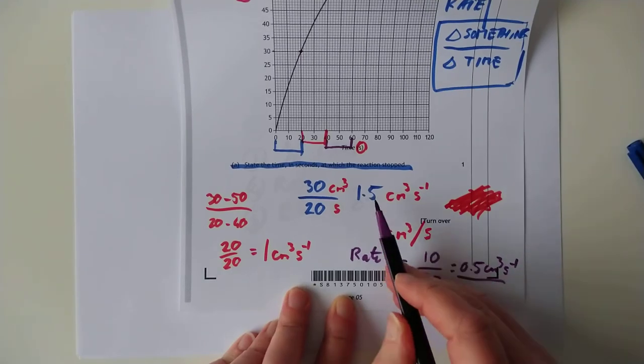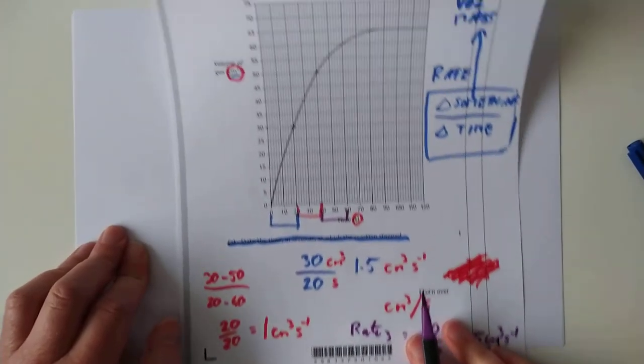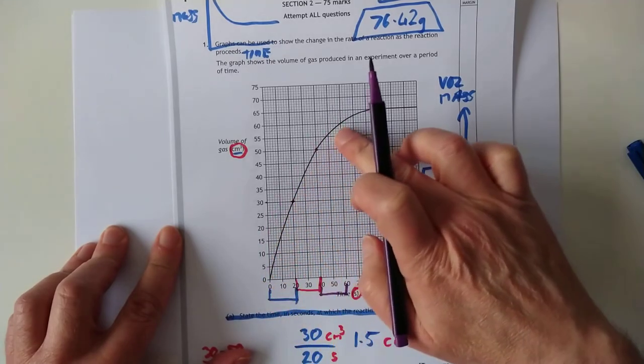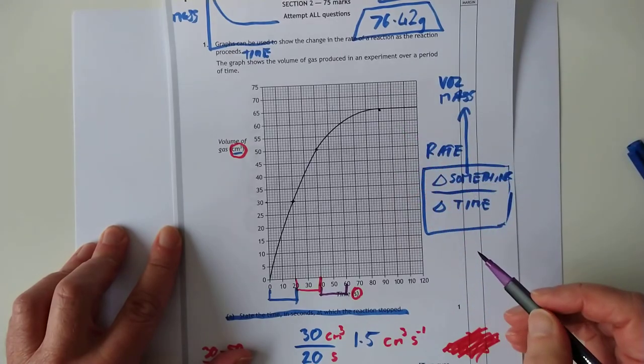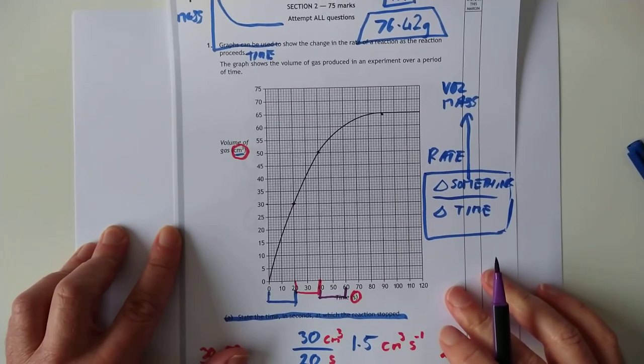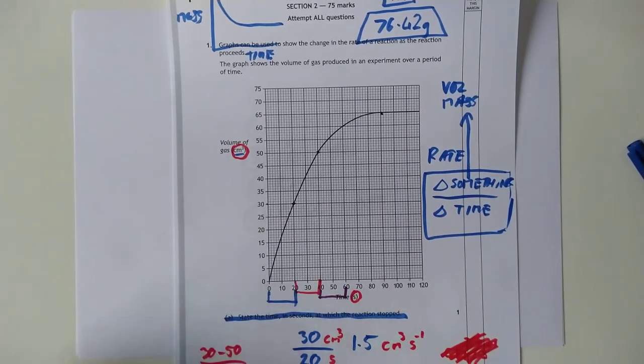So now we're down to a rate of 0.5 centimeters cubed per second. And as you can see, the rate is progressively getting slower. And that, of course, is exactly why the graph is this shape. Because sooner or later, the rate at this point here is now zero, and the experiment has finished. Thanks for listening, folks. Bye-bye.